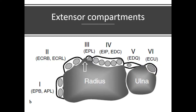There are six extensor compartments. The APL has multiple slips which can be used for reconstruction or interposition. It's also important to note that the EPB sometimes has a separate sheath or compartment when you release de Quervain's — remember there can be two separate compartments to release. The ECU has a separate sub-sheath that contributes to the stability of the ulnar side of the wrist through the TFCC.